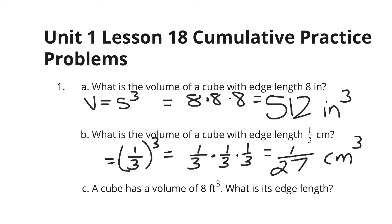And then a cube has a volume of 8 feet cubed. What is its edge length? So we're going backwards now. In other words, if volume is equal to 8, what number times itself times itself is going to get us back to 8? Well, how about 2? 2 times 2 times 2 is 8, and so the edge length is going to be 2 feet.